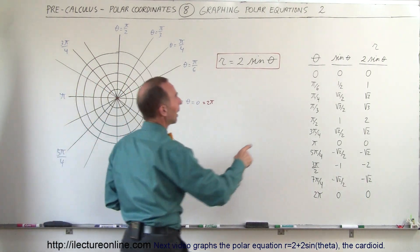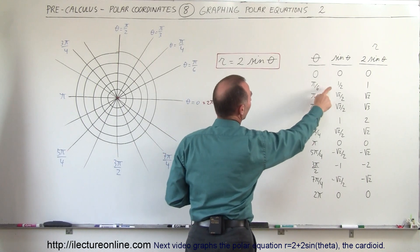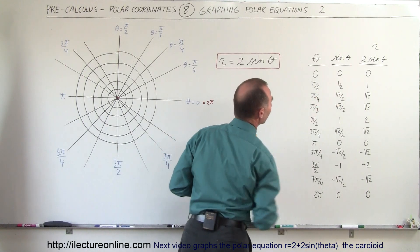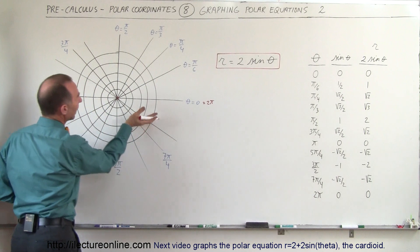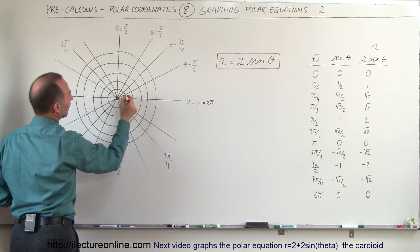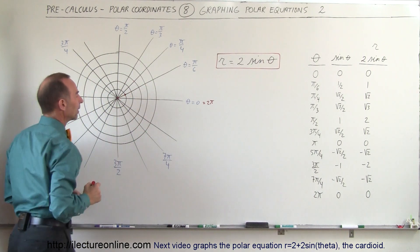Next we go to the angle being π divided by 6. Sine is equal to 1/2, r is equal to 1, so when the angle is π divided by 6, we have a point right there.